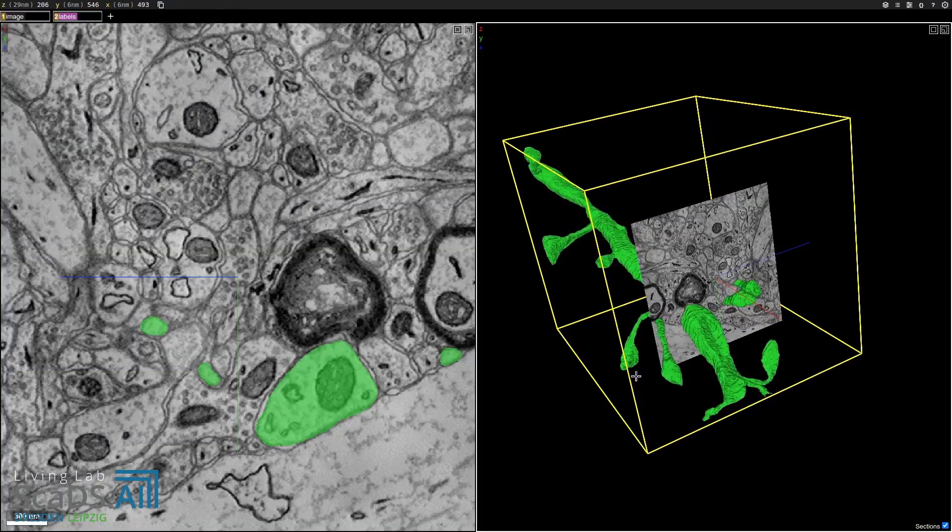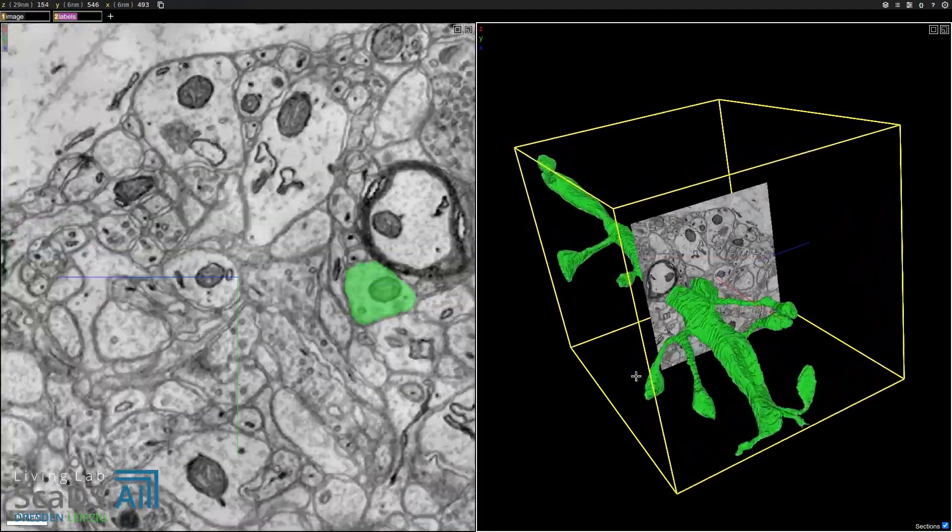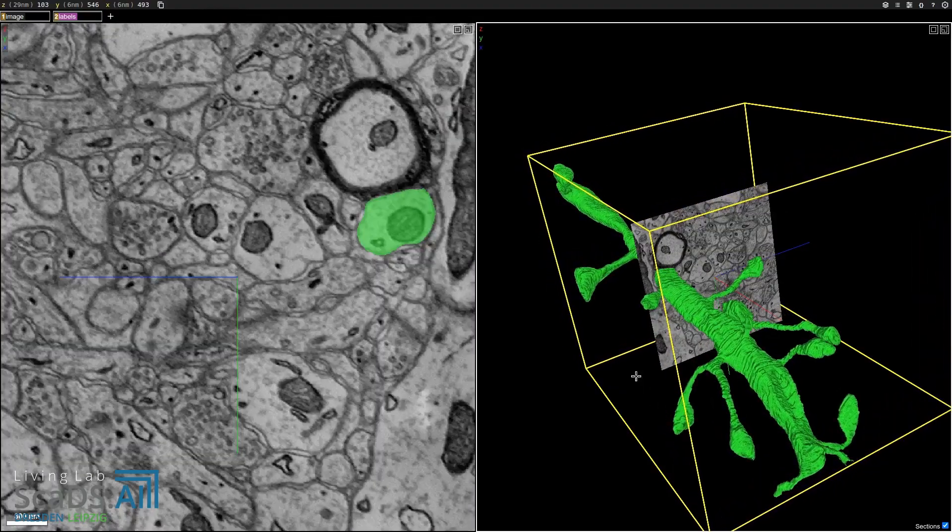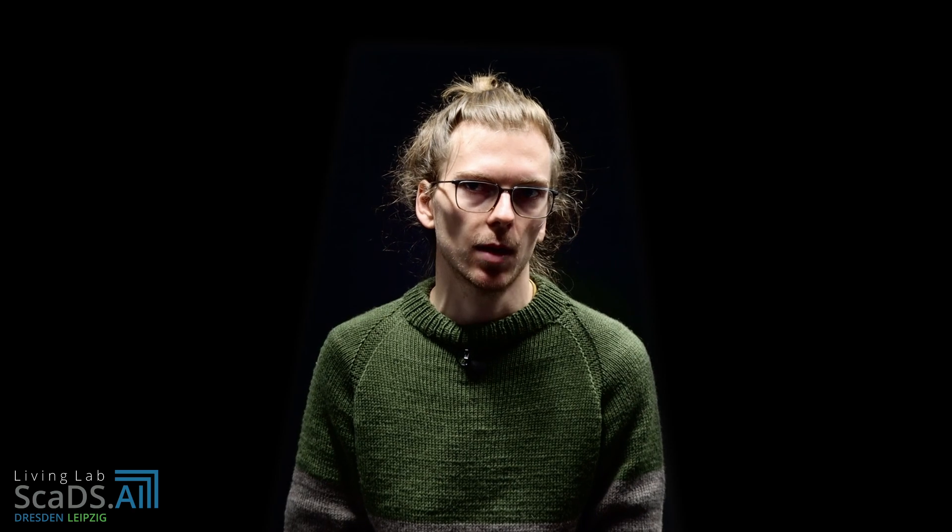This segmentation problem is particularly challenging because of the complex shapes of the neurons. There are many approaches for tackling image segmentation problems. In the following I will present to you the one that is producing the best results for segmenting neural tissue. The approach involves two main components: deep neural networks and solving a graph theoretical multi-cut problem. In this video we will concentrate on the multi-cut problem.